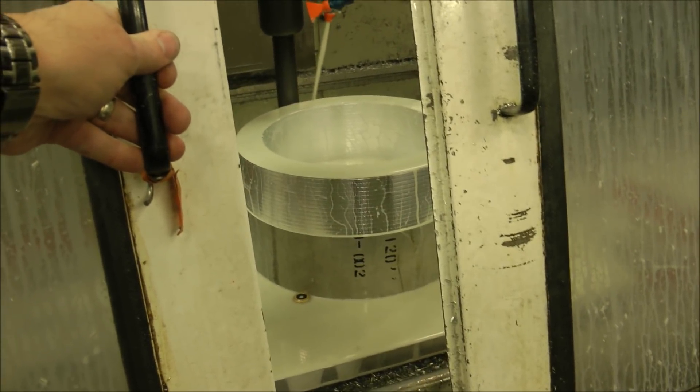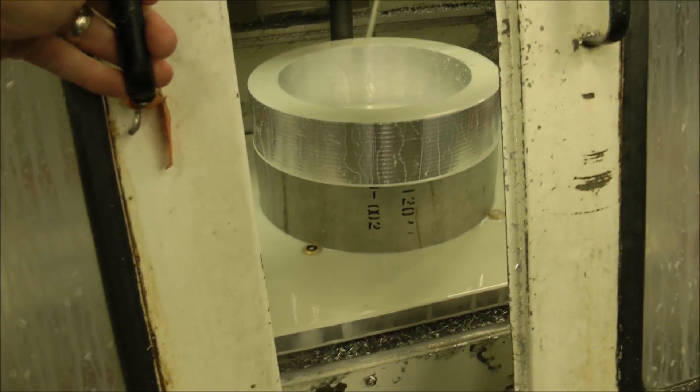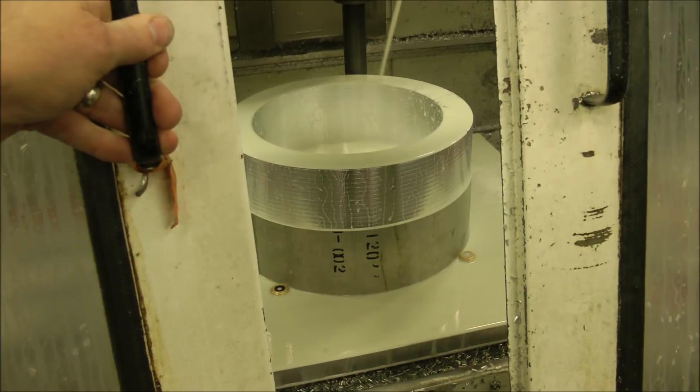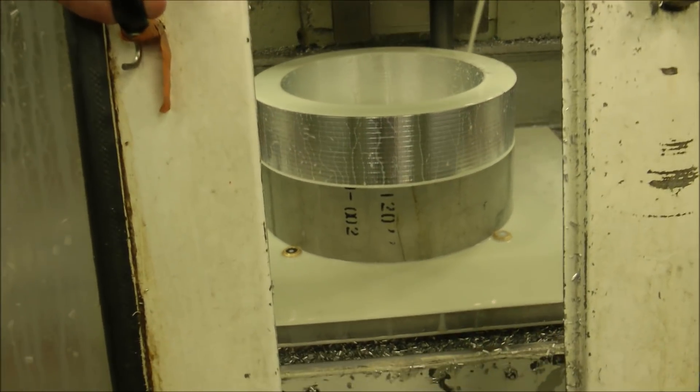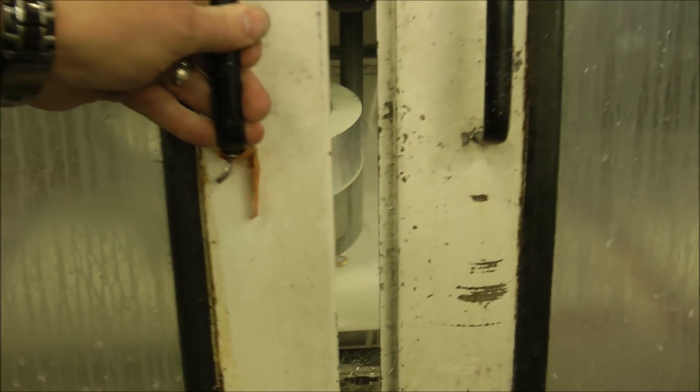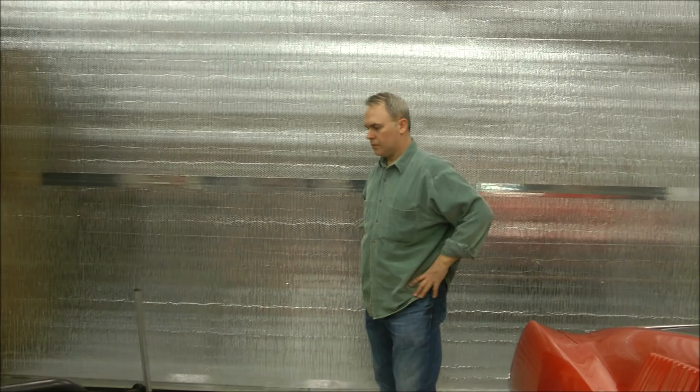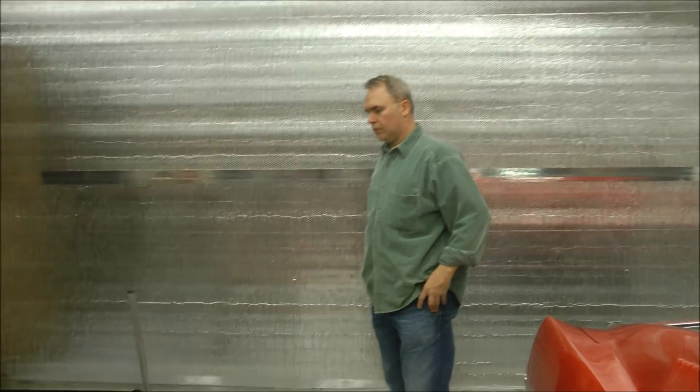And here we are working on the outer case. I'm trying not to get coolant on the camera. As you can see, this is the first pass to take off the outside of the bell housing. Sorry about the noise, guys. The CNC machine is working on a motor mounting plate.